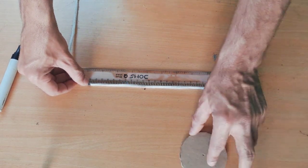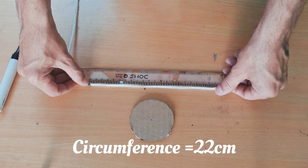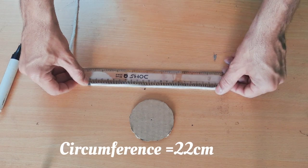So this circle of circumference is 22 cm. Now we have to measure the diameter.